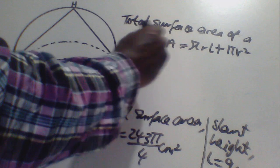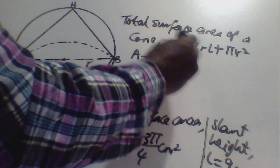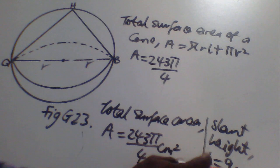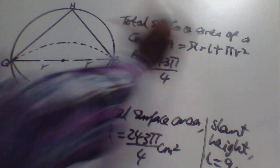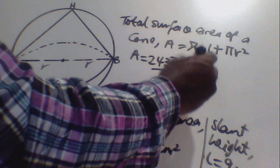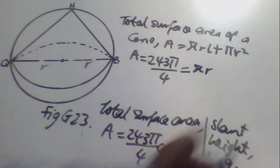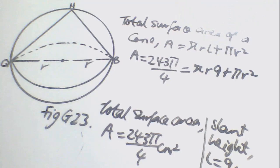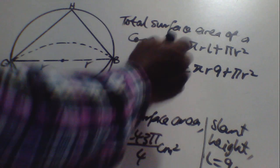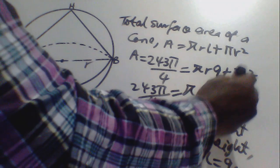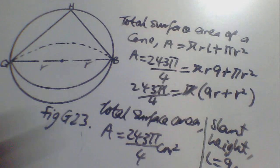We are given that A equals 243π/4. Since L equals 9, we substitute: 243π/4 equals πR(9) plus πR². Since π is common, we can cancel π from both sides, giving us: 243/4 equals 9R plus R².